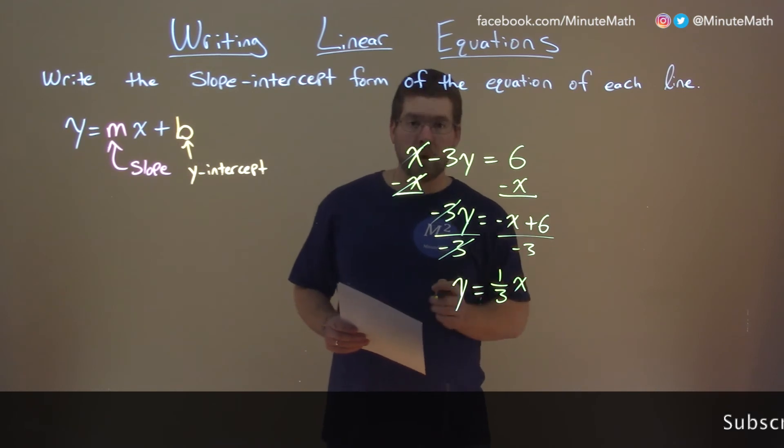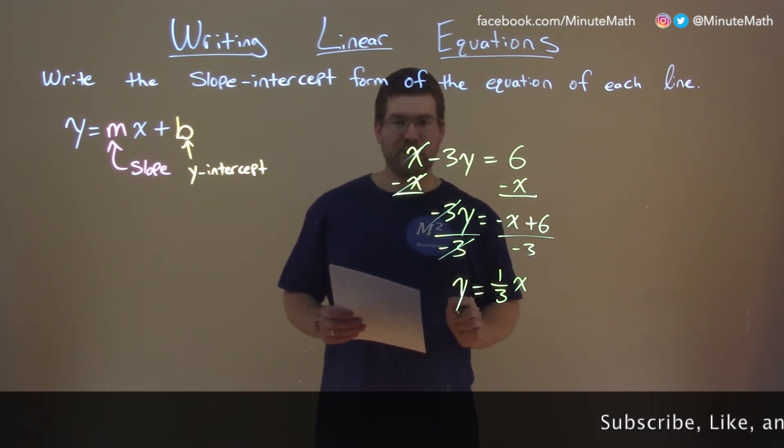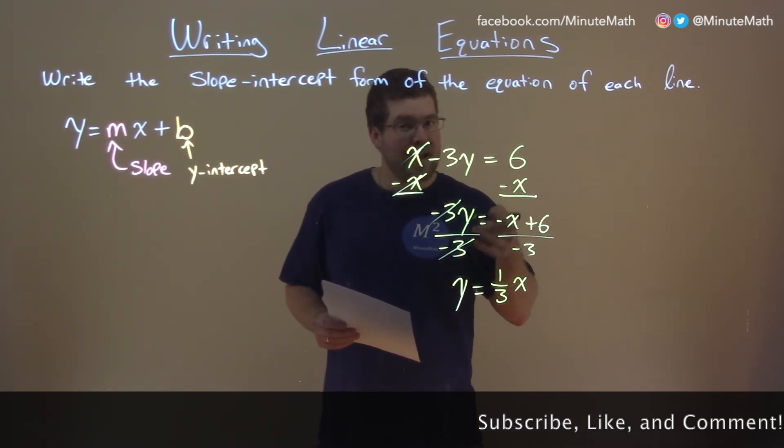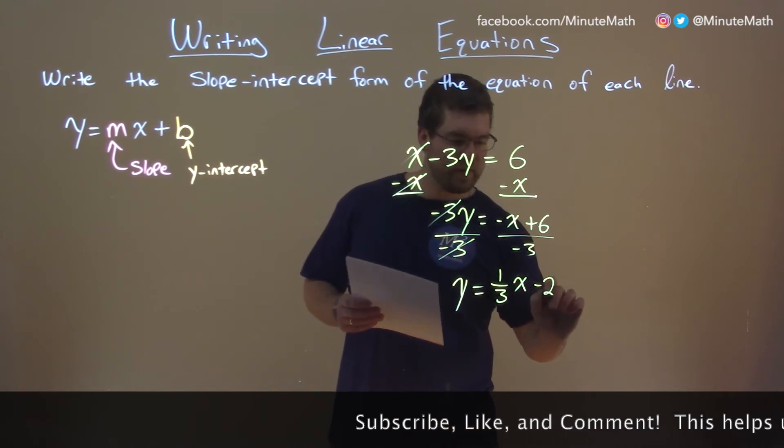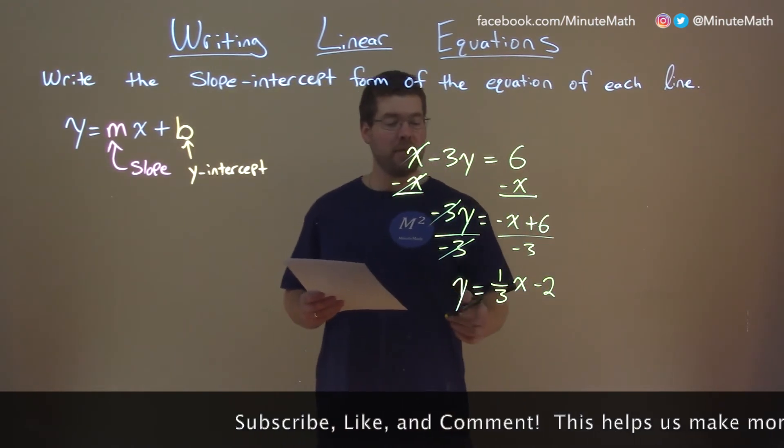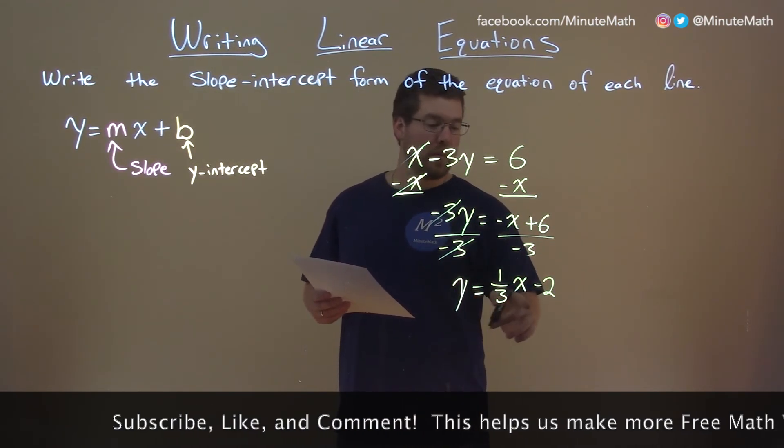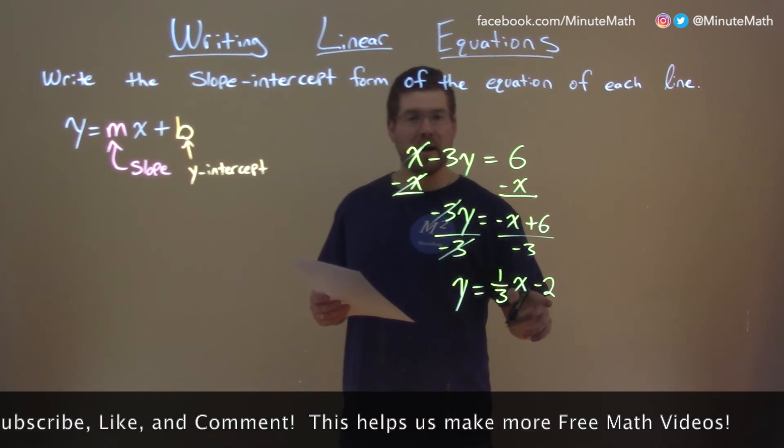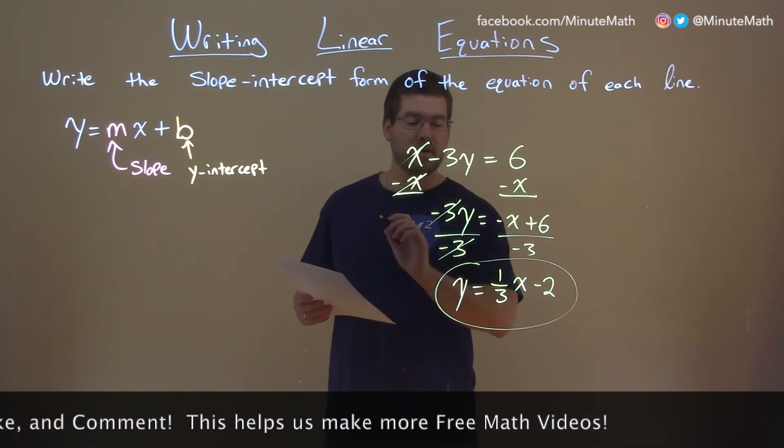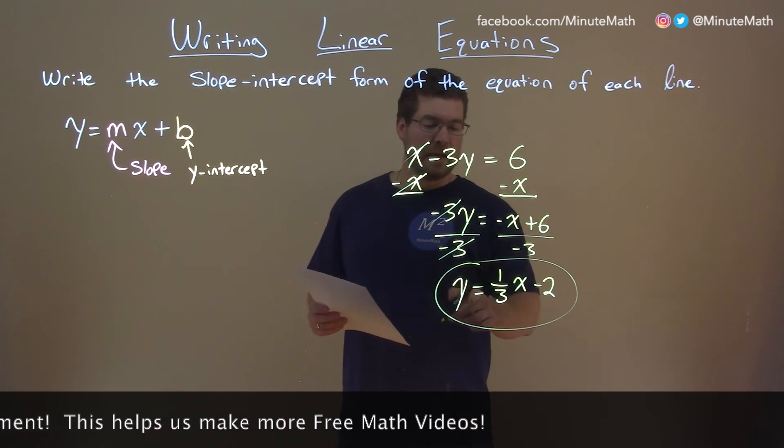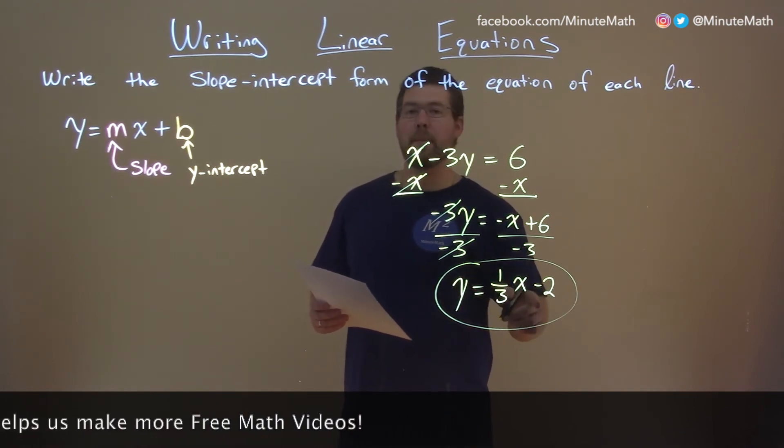Don't forget though, we have two parts. 6 divided by negative 3, that's going to be negative 2. So we have minus 2 here, and now we have our answer. 1 third is our slope, negative 2 is our y-intercept, and our final answer in slope-intercept form is y equals 1 third x minus 2.